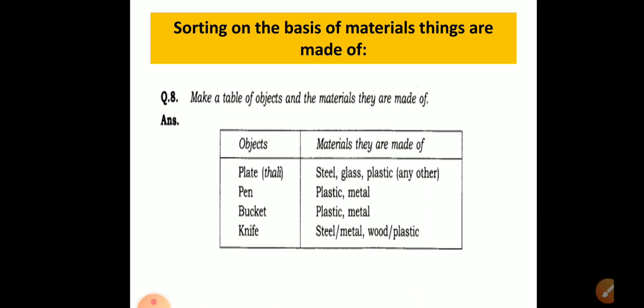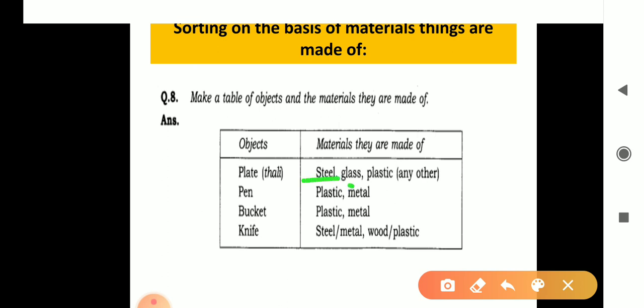Another example — sorting on the basis of the material things are made of. Make a table of objects and the materials they are made up of. Fancy plates may be made of steel, glass, plastic, or sometimes biodegradable material like a banana leaf. Pen may be plastic or metal. Bucket may be plastic or metal. Knife — the blade is metallic, and the handle may be steel, wood, or plastic.